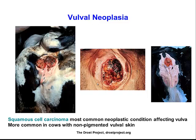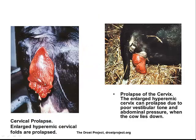Neoplasia, particularly in non-pigmented vulval tissue in cows, is quite common in our environment. Squamous cell carcinomas are very common in older cows exposed to excessive amounts of sunlight. We will talk about this in later lectures.